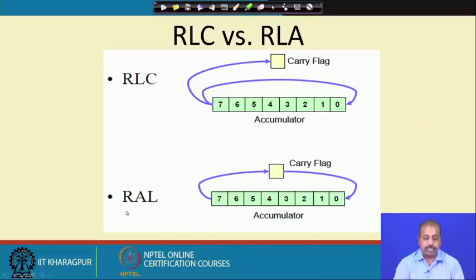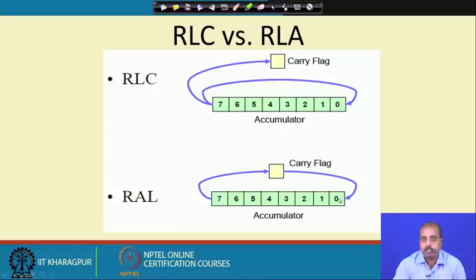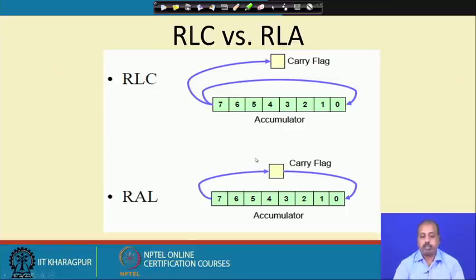On the other hand, RAL is also rotate left, but bit 7 will go to the carry flag and the carry will come to bit 0. This is a rotation through the carry — that is why it is called rotate through carry. The carry is also rotated as part of it.